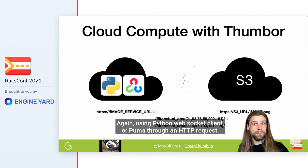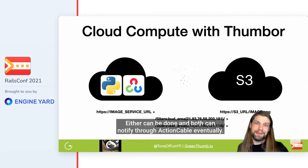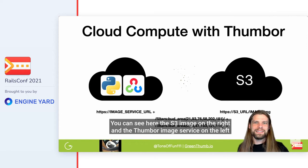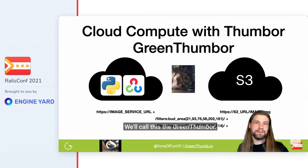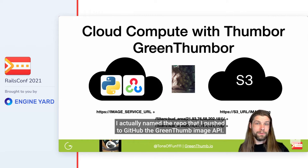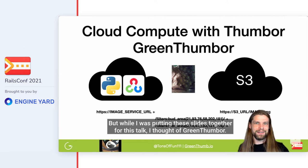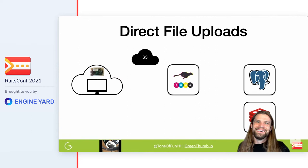The method can also take a channel identifier for notifying back to Action Cable, again using a Python WebSocket client or Puma through an HTTP request — either can be done, and both can notify through Action Cable eventually. You can see here the S3 image on the right and the Thumbor image service on the left; when combined, they output the masked image. We'll call this the GreenThumbor. I actually named the repo I pushed to GitHub the GreenThumb Image API, but while putting these slides together I thought GreenThumbor sounded better.